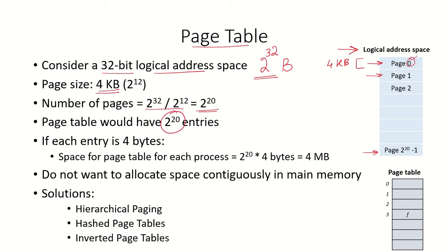Since there are 2^20 pages, the page table will have that many entries — one entry for each page in the logical address space. If each entry is 4 bytes, containing the frame number, a valid bit, and other information, then the space required for the page table will be 2^20 multiplied by 4 bytes, which gives us 4 megabytes. This much space is required for each process, because each process has its own page table.